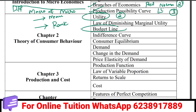We will talk about the budget line — the horizontal intercept, vertical intercept, slope, and changes in the budget line.